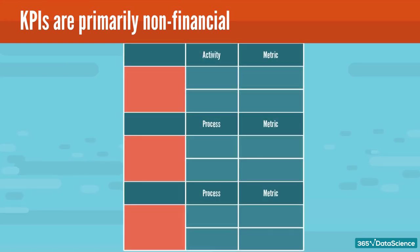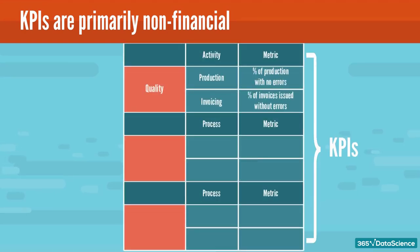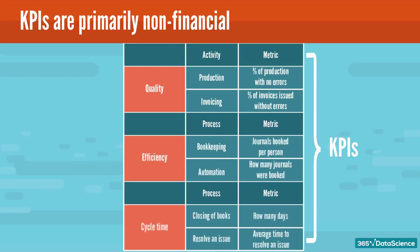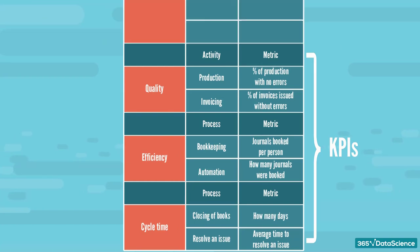KPIs are primarily non-financial and, as you can see in the scheme here, measure quality, efficiency, and cycle time. Some examples are percentage of invoices without errors, which tracks the accuracy of your billing department, number of journals performed per person per FTE or full-time equivalent, percentage of journals booked automatically, and so on.